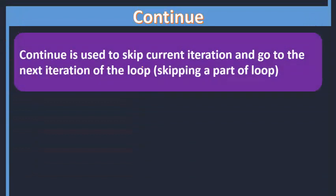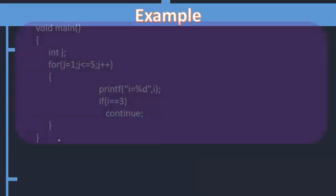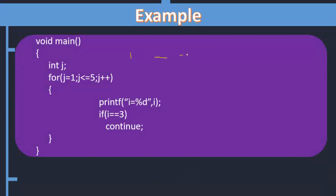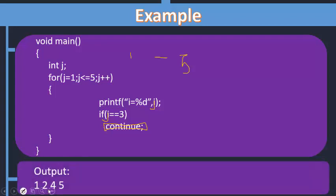Continue is used to skip the current iteration — it will not terminate the loop, but will stop just one repetition and move to the next. For example, for j from 1 to 5, we print j, but if j equals 3 we execute continue, which skips that iteration. The output will be 1, 2, 4, and 5. We did not print 3 because we skipped it. Skip means continue to the next iteration.